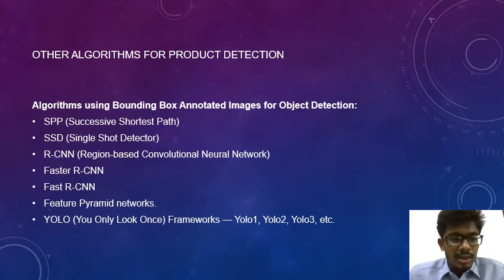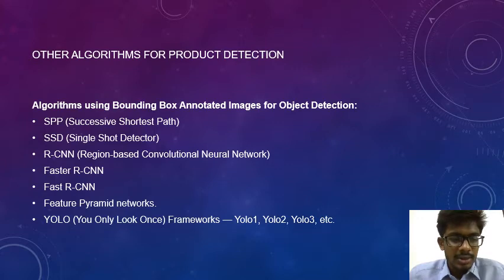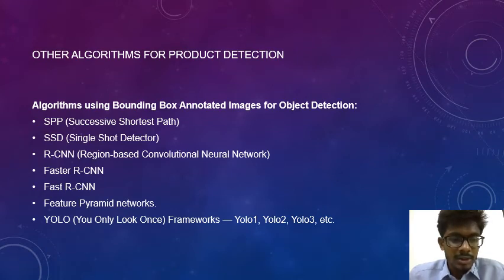Now we are looking at other algorithms for product detection. These are other algorithms using bounding-box-annotated images for object detection. SPP — Successive Shortest Path — is a deep learning algorithm. SSD — Single Shot Detector — detects objects in an image using a single shot. Other frameworks include R-CNN (Region-Based Convolutional Neural Network), Fast R-CNN, Faster R-CNN, Feature Pyramid Networks (FPN), and YOLO (You Only Look Once). These are the frameworks and deep learning algorithms used for product detection and object detection.